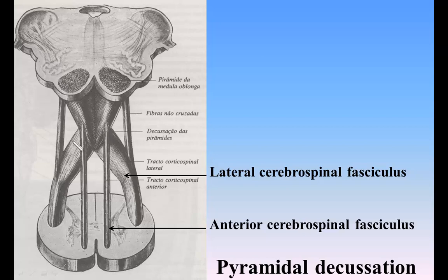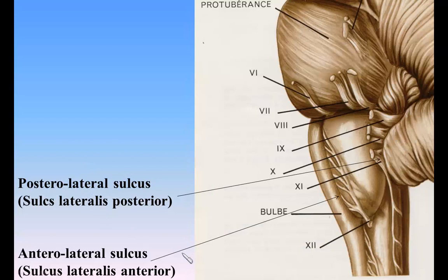Having crossed the middle line, they pass down in the posterior part of the lateral funiculus as the lateral cerebrospinal fasciculus. The remaining fibers — that is, those which occupy the lateral part of the pyramid — do not cross the middle line, but are carried downward as the anterior cerebrospinal fasciculus into the anterior funiculus of the same side. The greater part of the anterior proper fasciculus of the medulla spinalis is continued upward through the medulla oblongata under the name of the medial longitudinal fasciculus.